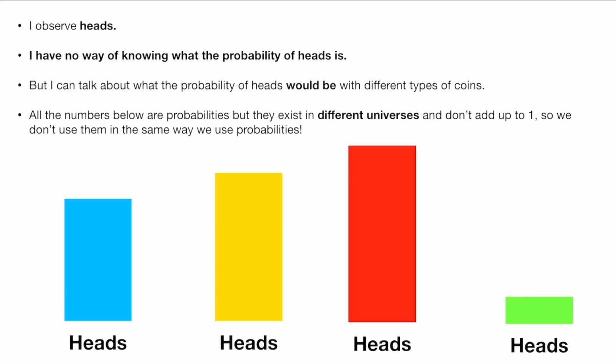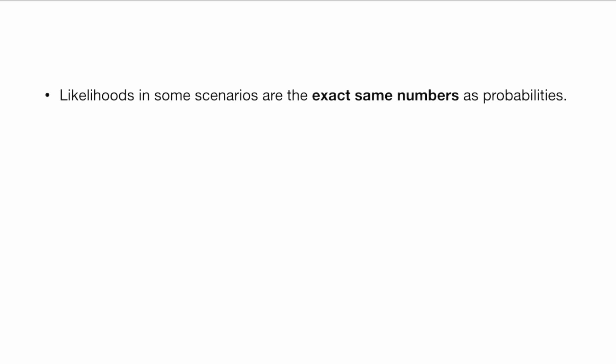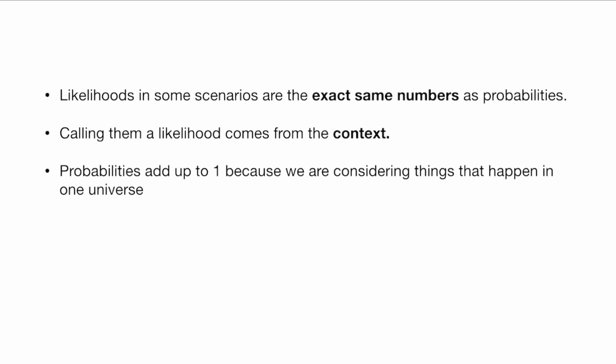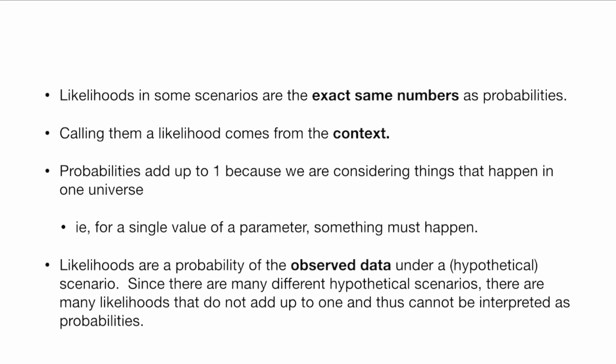I observe heads. I don't know what the probability of heads is, but I can talk about what the probability of heads would be with different types of coins. All of the numbers below are probabilities in a sense, but they exist in different universes and don't add up to one, so we don't use them in the same way that we use probabilities. They are likelihoods of our observed data under different scenarios. Likelihoods in some scenarios are the exact same numbers as probabilities — calling them a likelihood comes from the context that we're using them in. Probabilities add up to one because we're considering things in one universe, i.e., for a single value of a parameter, something must happen in probability world. But likelihoods are a probability of the observed data under a hypothetical scenario. Since there are many different hypothetical scenarios, and in statistics we don't know which one, there are many likelihoods that do not add up to one and thus cannot be interpreted as probabilities.